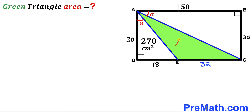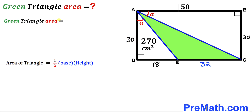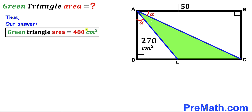Now for the final step: we calculate the area of the green shaded triangle AEC. Using Area = ½ × base × height, the base EC = 32 and the height = 30 units. So the area = ½ × 32 × 30 = 480 cm². Thus the area of green shaded triangle AEC is 480 cm², and that's our final answer.